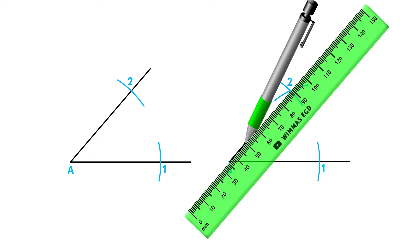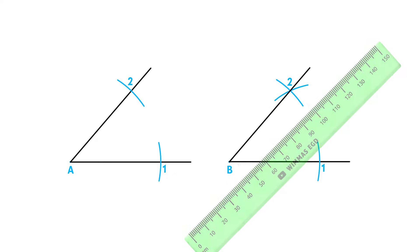You can now take your ruler and draw the last side from point B through the intersecting point 2.